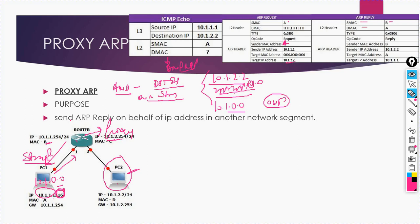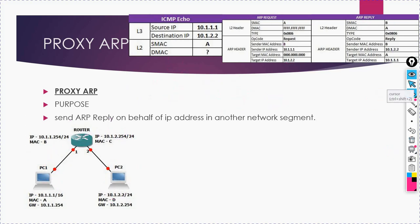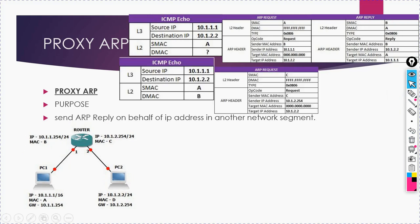Checking this ARP reply: the sender MAC address is the router's MAC address and the destination MAC address is PC1's MAC address. The sender MAC is the router interface MAC address and the sender IP is 10.1.2.2. In reality the sender IP with this MAC address is the router interface 10.1.2.254, but logically we assume 10.1.2.2, because this is Proxy ARP — on behalf of that IP the router is responding with its own MAC address.